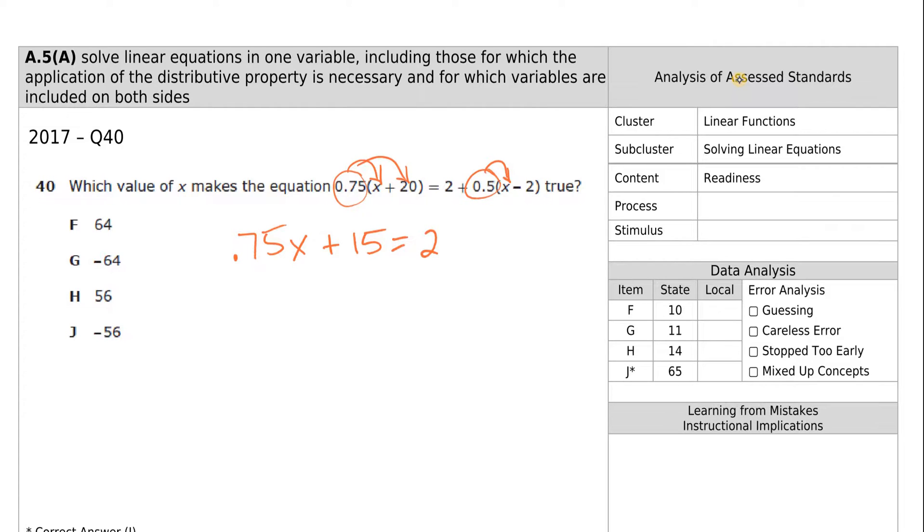Plus 15 is equal to 2. 0.5 times x is 0.5x. And 0.5 times negative 2 is half of negative 2, which is negative 1. We have variables on both sides, so we want to combine them. Minus 0.5x, minus 0.5x. We have 0.75 minus 0.5 is 0.25x. Plus 15 equals, and we had two regular numbers. Combined like terms, 2 minus 1 is 1.